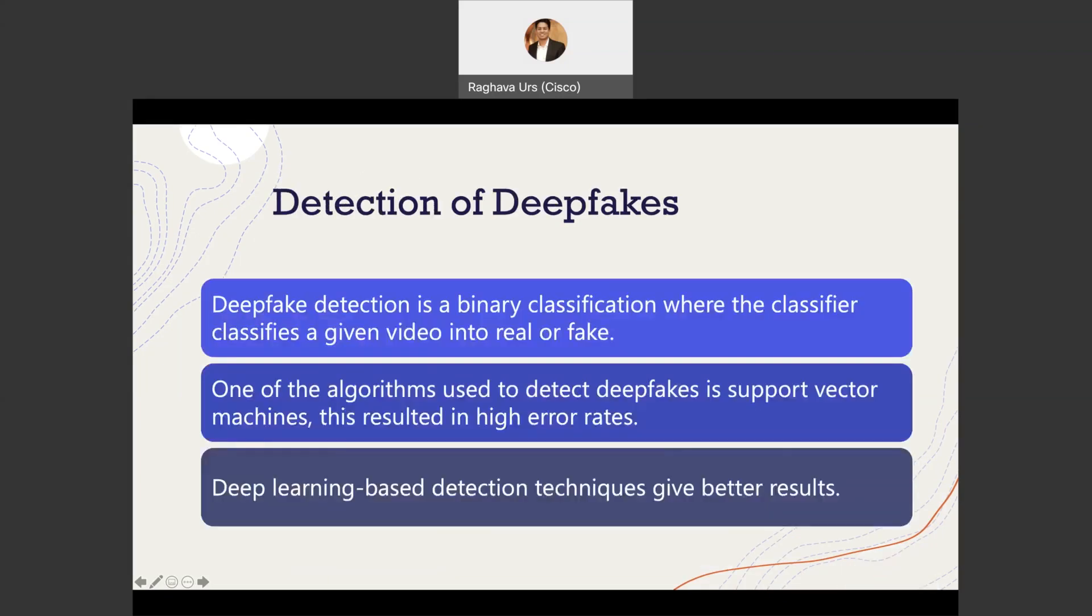Detection of deepfake: The deepfake detection is used to be a binary classification where the classifiers gave the video the response of either fake or real. For such classification problems, it is important to have a large dataset to train the model. One of the most prominently used base algorithms to detect deepfake is support vector machine. The issue with SVMs were that they have high error rate. The DL based detection techniques are gaining momentum as they give better results.